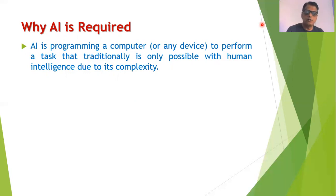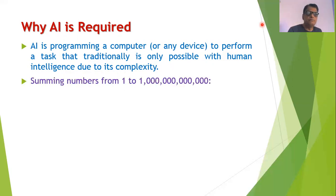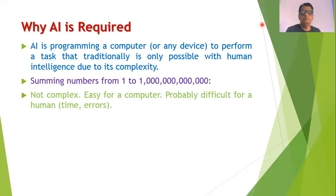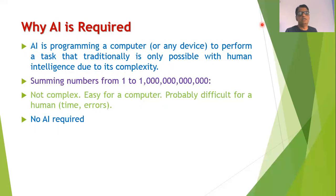A computer is not in a position to perform many tasks just like human beings because when the complexity of a task increases, human beings are more suitable. For example, if I ask you to sum the numbers from 1 to 10 to the power 2, this is a very huge sum but not complex — a simple program can do it. But no artificial intelligence is required for such tasks.